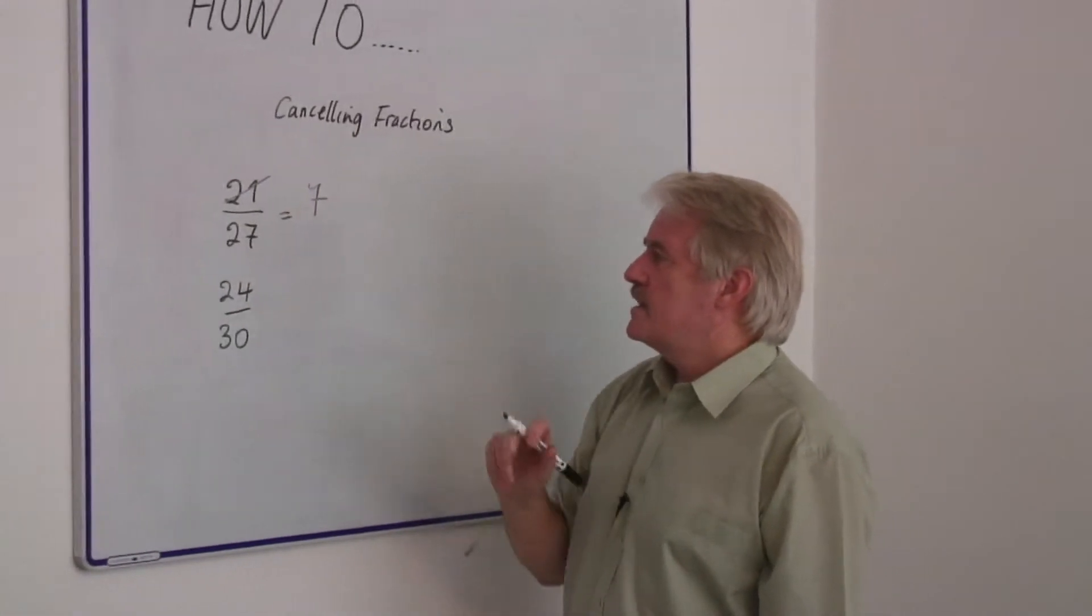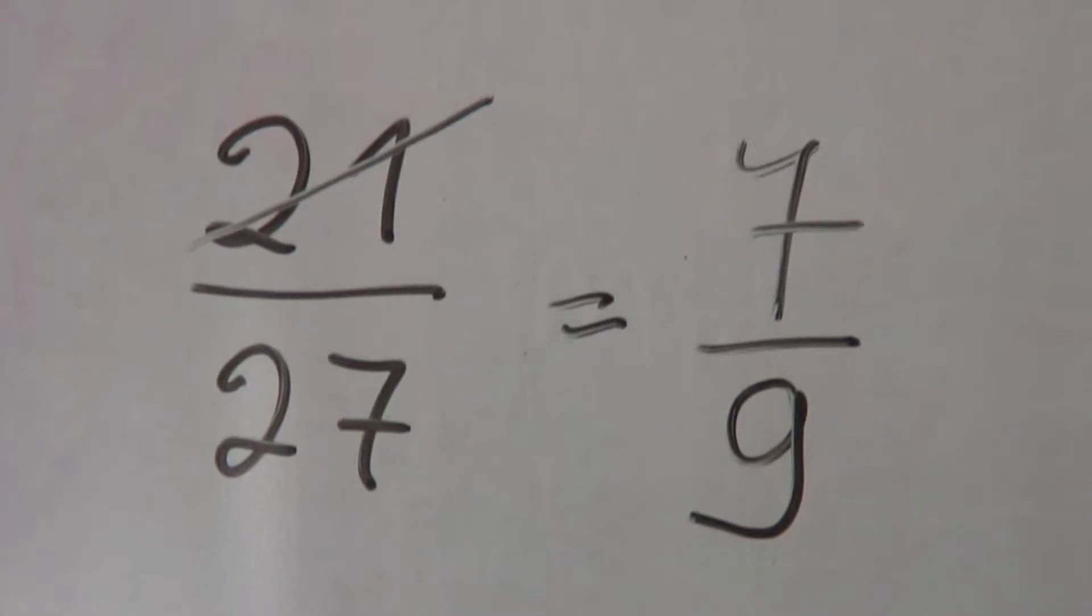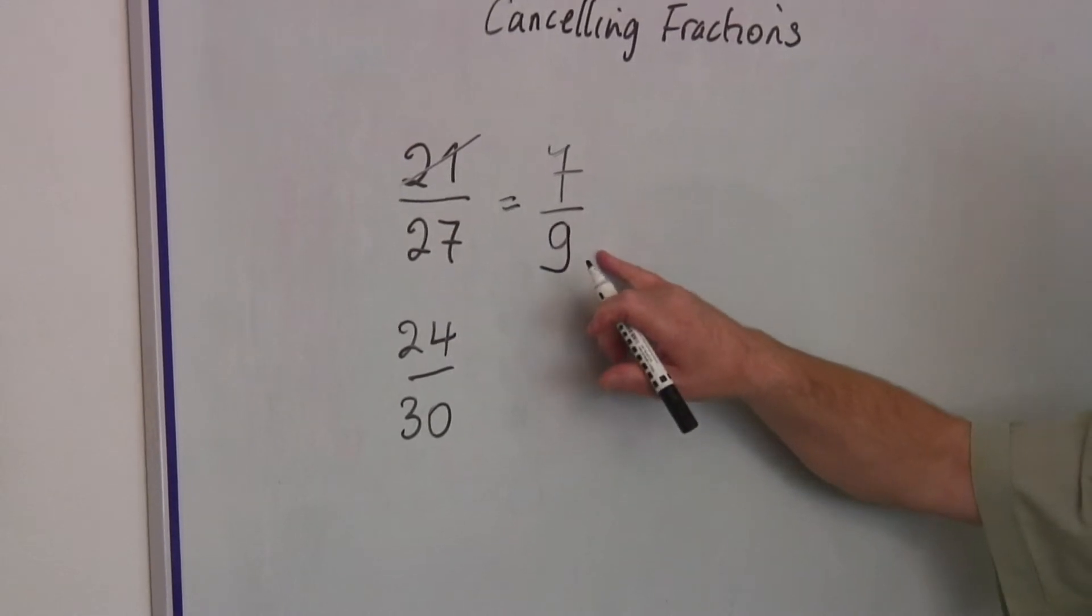Now, twenty-seven divided by three therefore gives me nine. So in fact, I've cancelled the fraction and the fraction is seven-ninths.